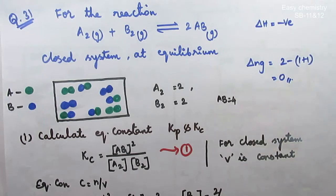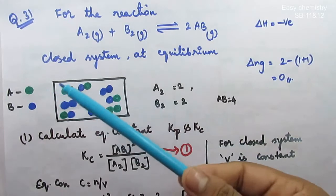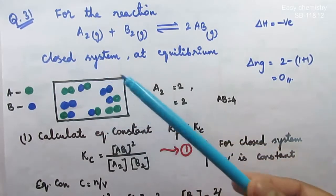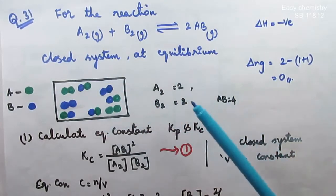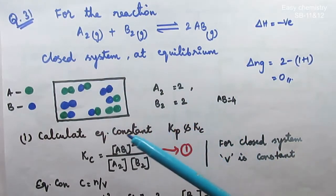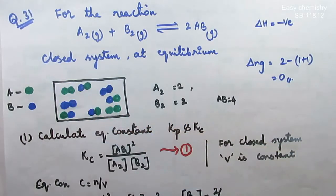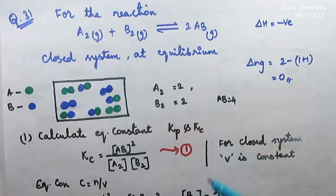Hello students. In this case we are going to discuss the 11th standard equilibrium lesson — that is the physical and chemical equilibrium — textual evaluation. We are going to discuss question number 30. This is a very easy question and I will explain how easy it is.